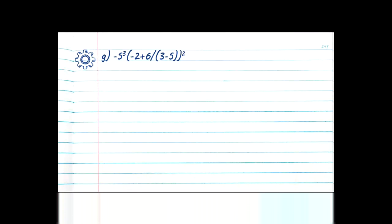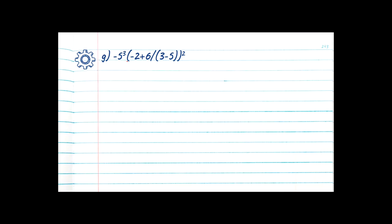Let's go ahead and look at example G. We start off the same way — are there any brackets? Minus 5 to the exponent 3, opening bracket — so we start over. Is there another opening bracket? Minus 2 plus 6 divided by opening bracket — yes, so we start over again. Are there any more? 3 minus 5, closing bracket — we found the innermost bracket. No exponents, no division or multiplication — step 4: 3 minus 5 is equal to minus 2. Now we step out to the parent: minus 2 plus 6 divided by negative 2. A negative divided by a positive gives a negative, and 6 divided by 2 is 3, so we have negative 3.